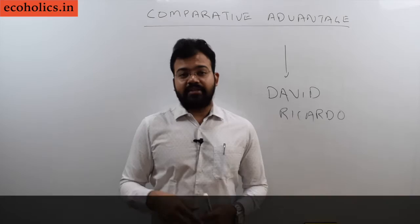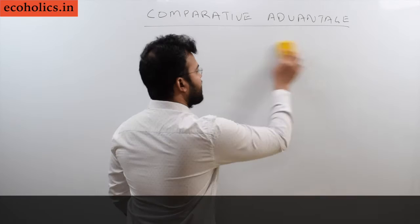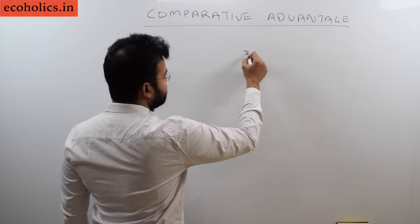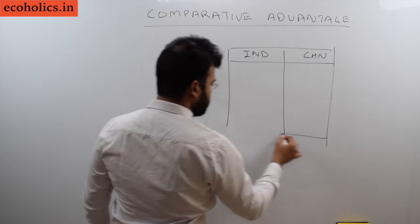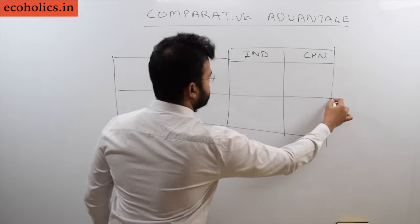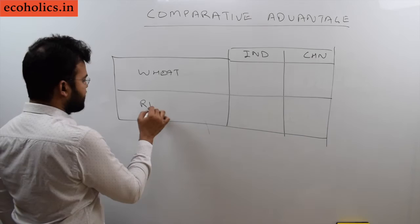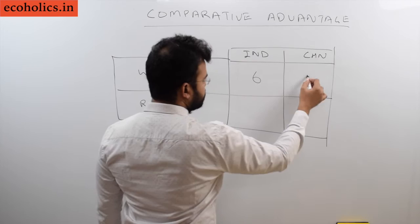With the help of an example, we will see how David Ricardo proved that particular notion. We will take India and China, two countries. These are hypothetical figures. Suppose we will take wheat and rice. This is 6, this is 1, this is 3, this is 2.